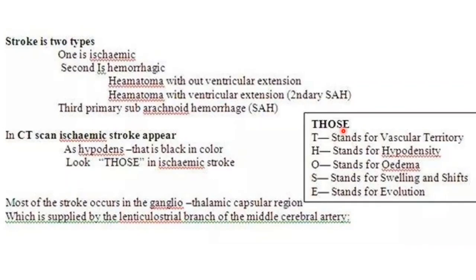There are mainly two types of stroke. First is ischemic stroke, caused by an embolus or blockage of normal blood flow to brain tissue, resulting in ischemic infarction. The second is hemorrhagic stroke, which may present as a hematoma with or without ventricular extension, secondary subarachnoid hemorrhage with ventricular extension, or primary subarachnoid hemorrhage without ventricular extension.